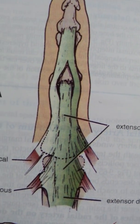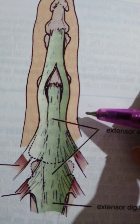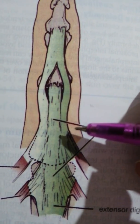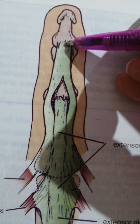We do have retinacular ligaments that emerge from the sides of the proximal phalanx to form the fibrous flexor sheath. But then they connect on the margins of the extensor expansion so that they would ultimately be attached at this point over here.